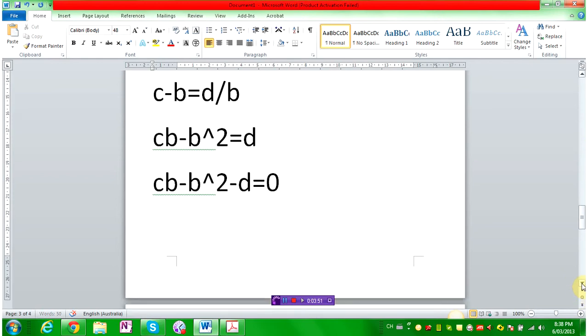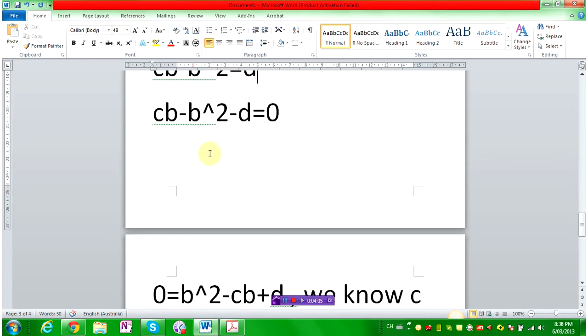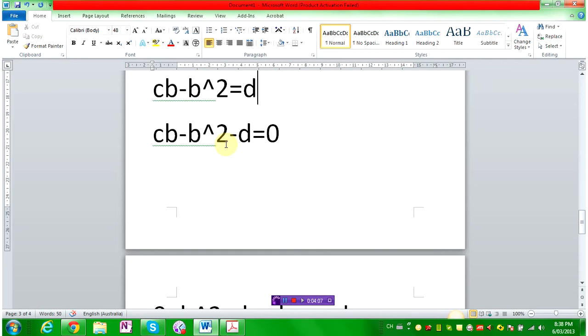So, you end up with, if you minus d from both sides, you end up with cb, C times b, minus b squared minus d equals to 0. Now, just to make life easier, I'm going to make them positive. Make b squared and d positive. So I'm going to move everything to this side and leave this side 0.